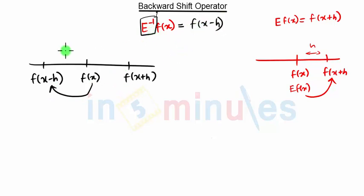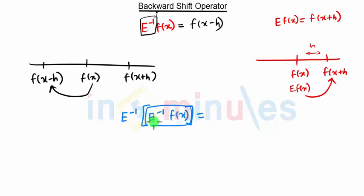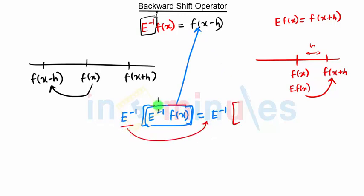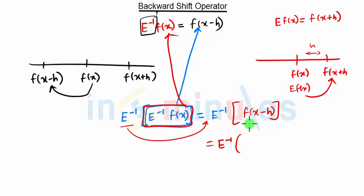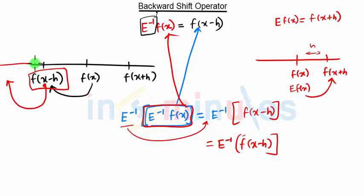We can apply the backward shift operator multiple times. So E⁻¹ of E⁻¹ of f(x): E⁻¹ of f(x) is f(x-h), and then applying E⁻¹ again, this term is nothing but the backward shift of f(x-h). Now we are at f(x-h) and taking the backward shift, so the result is f(x-2h). Therefore E⁻² of f(x) is nothing but f(x-2h).